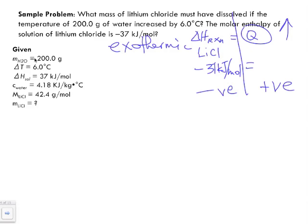Here's the important information we have: a mass of 200 grams of water, a delta T of six degrees Celsius (increased), a delta H of solution of 37 kilojoules per mole, and a specific heat capacity c of 4.18 kilojoules per kilogram degree Celsius. We need to convert 200 grams to 0.2 kilograms.